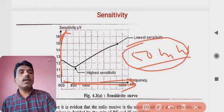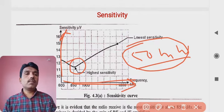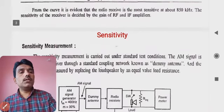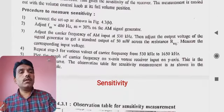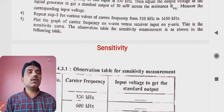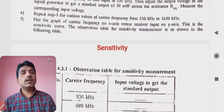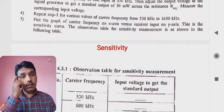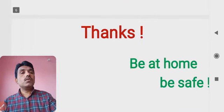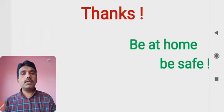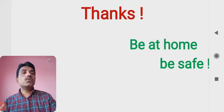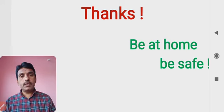At 850 kilohertz, we find the highest sensitivity. This is how the sensitivity measurement is carried out, and from the observations we can clearly determine the sensitivity of the receiver. This is the first characteristic for measurement of the receiver's characteristics — sensitivity. Thank you for joining this session; be at home and be safe.